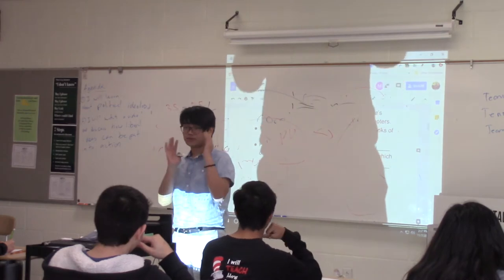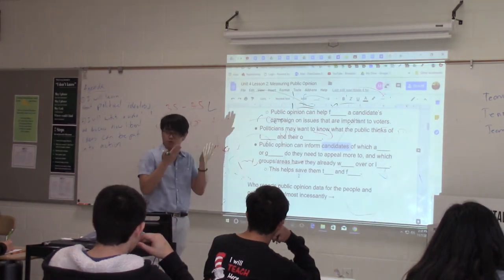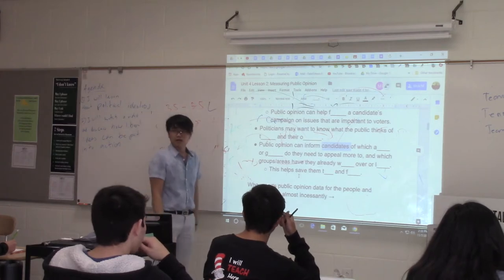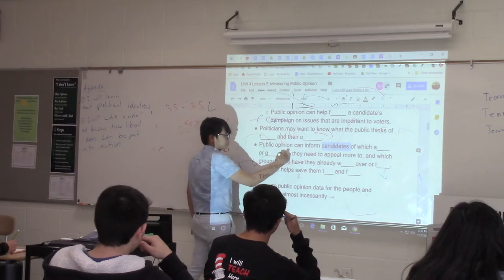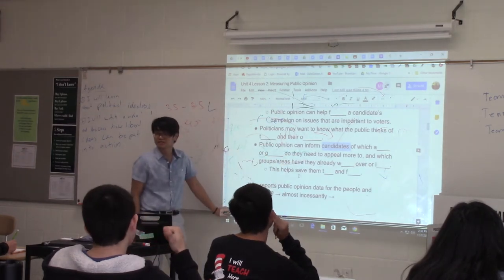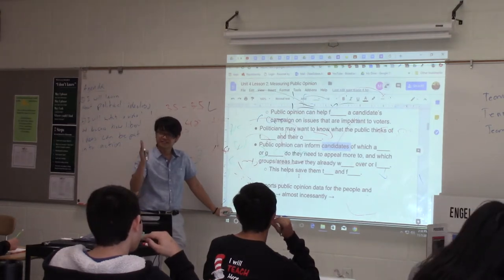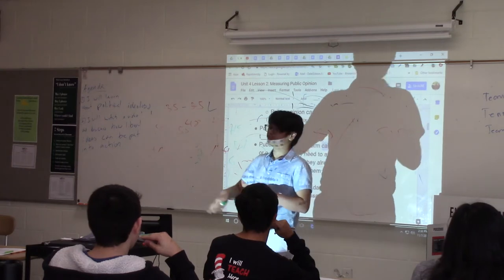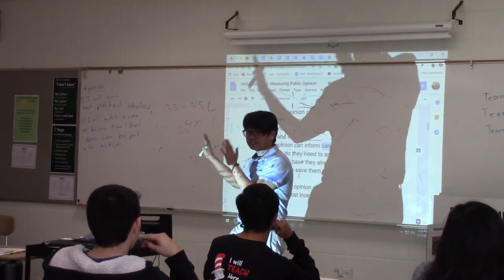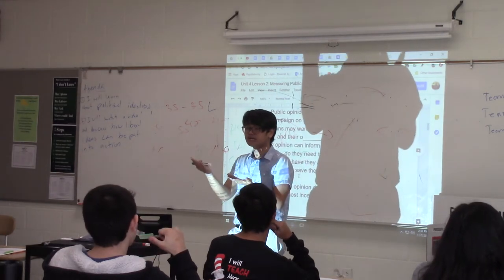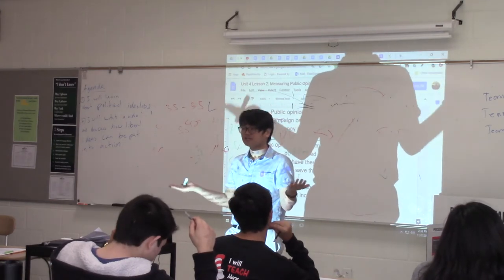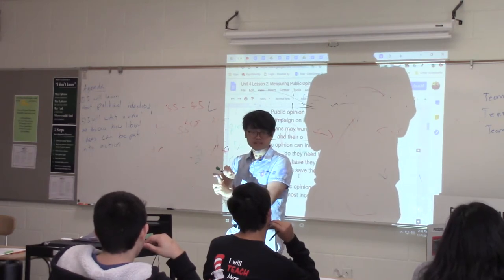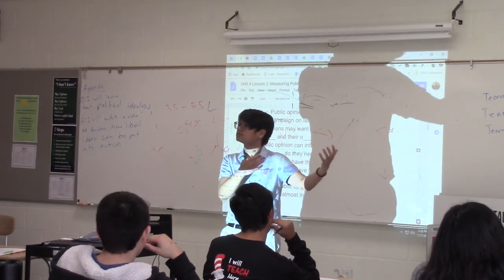Public opinion can inform candidates on which areas or groups they need to appeal to. This is why political candidates spend huge amounts of money on polling — most campaigns hire a dedicated pollster. In 2016, if 80% of Californians supported Hillary Clinton, her campaign strategist would know not to spend time or money there — you've already won California. And if you're Donald Trump, you don't go to California; you move to states you can actually win or flip.